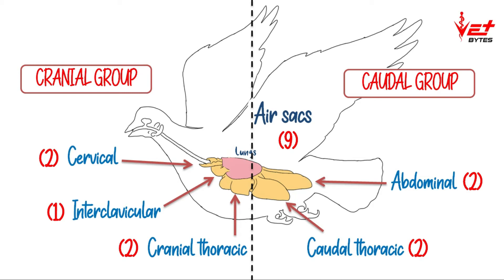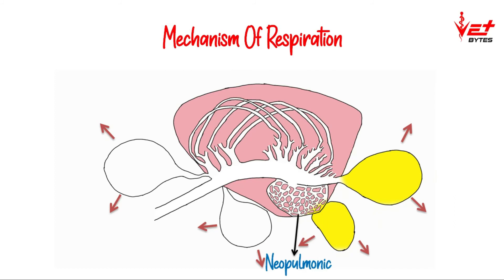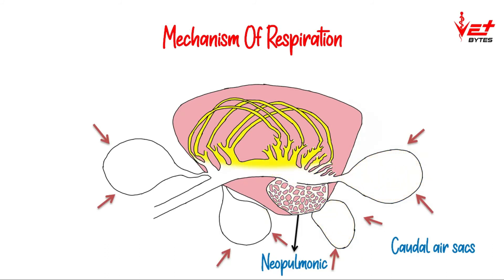During respiration, the volume of air in the cranial and caudal groups is balanced equally. During inspiration, the air sacs expand, so air from the atmosphere goes through the neopulmonic parabronchi into the caudal air sacs. During expiration, the air sacs contract, so air from the caudal air sacs goes through the neopulmonic parabronchi into the paleopulmonic parabronchi.